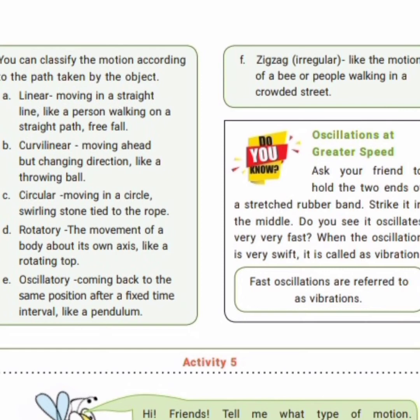Circular motion is when an object moves in a circular path, like a stone tied to a rope. Rotatory motion is the movement of a body about its own axis, like a rotating top — the axis is at a fixed position. Oscillatory motion is coming back to the same position after a fixed time interval, like a pendulum moving back and forth.